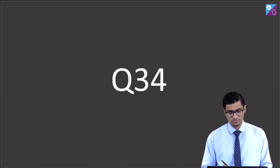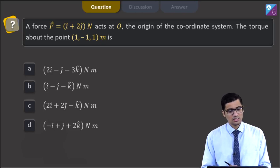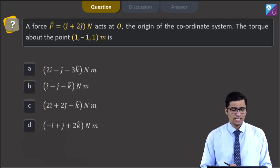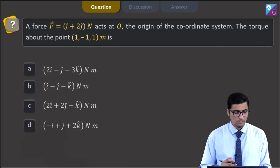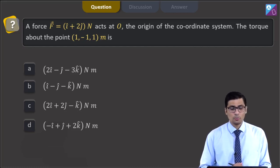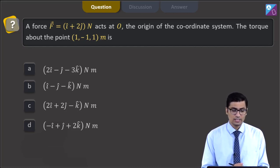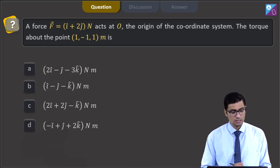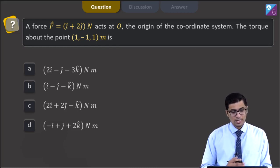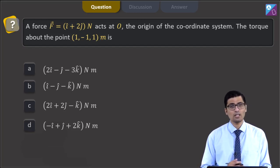This is question 34. The question states: a force F vector equal to î plus 2ĵ Newton acts at O, the origin of the coordinate system. The torque about the point (1, -1, 1) meter is — the four options are: 2î minus ĵ minus 3k̂ Newton meter, î minus k̂ Newton meter, 2î plus 2ĵ minus k̂ Newton meter, or minus î plus ĵ plus 2k̂ Newton meters.